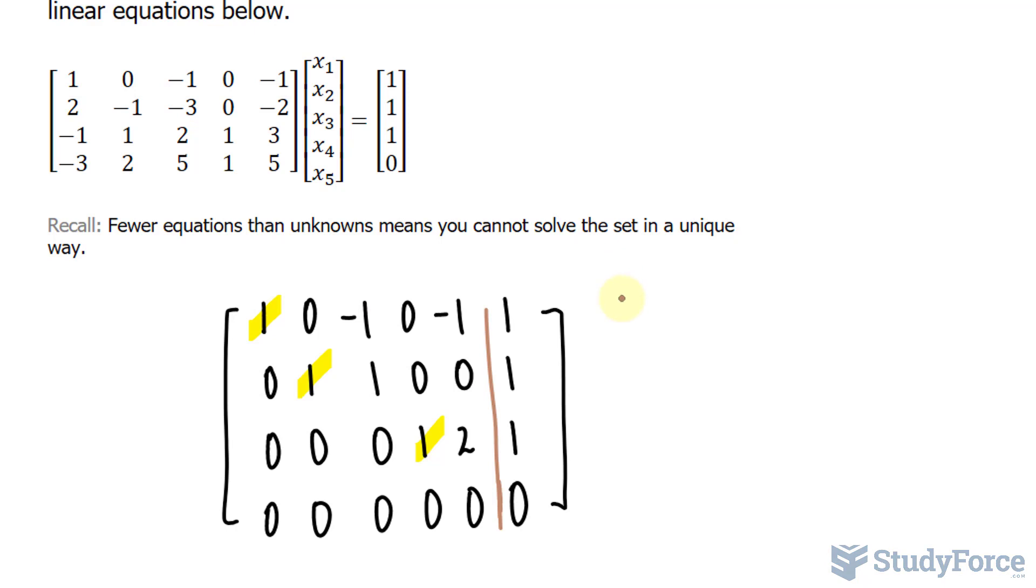Take, for example, row one. This column represents x sub one all the way through x sub five. So we have x sub one minus x sub three. That represents this negative one minus x sub five is equal to one.